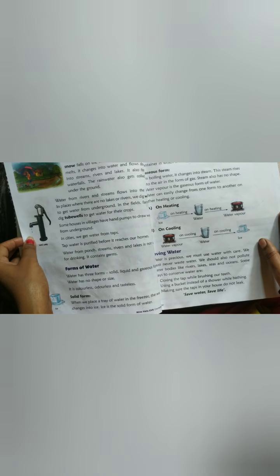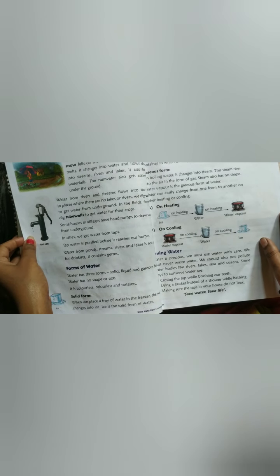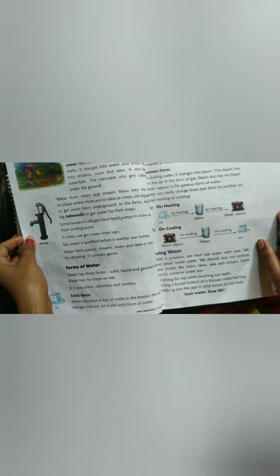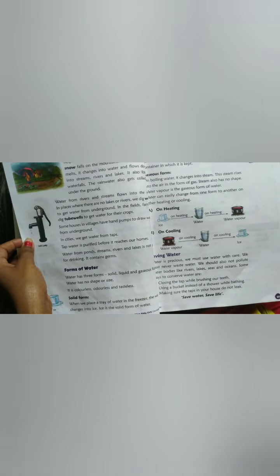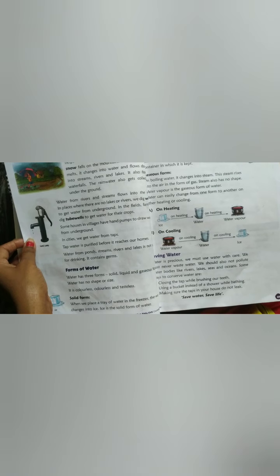And also we learnt about forms of water. So how many forms of water? Three forms of water. One is solid form, second one is liquid form, and third one is gaseous form. So there are three forms of water.